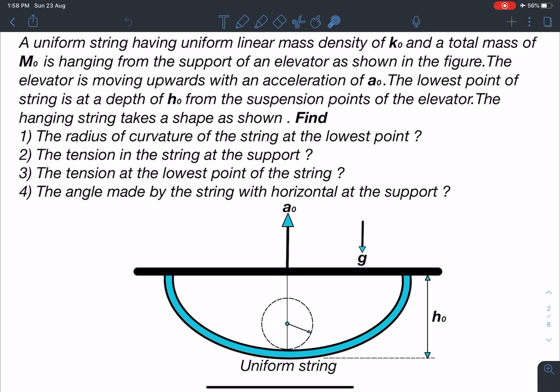So here there are four questions. Number one, the radius of curvature of the string at the lowest point. Number two, tension in the string at the support. Tension at the lowest point of the string and angle made by the string with horizontal at the support. So we have to comment on this angle also.